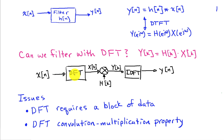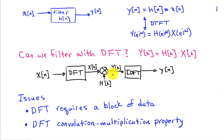We have an input x of n, take a DFT to get coefficients X[k]. We multiply those by the corresponding DFT coefficients for the impulse response H[k]. Those Y[k]'s then get an inverse DFT to obtain y of n.